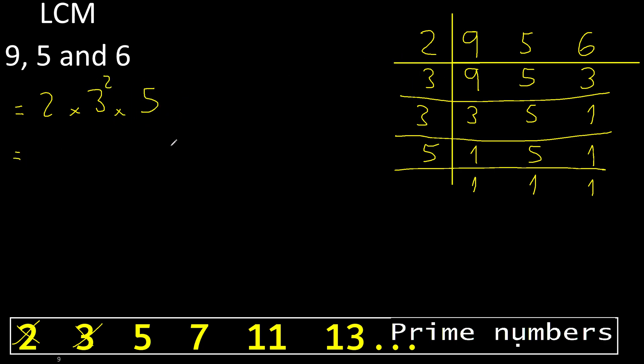Multiply: 2 multiplied by 3 is 6, 6 multiplied by 3 is 18, 18 multiplied by 5.